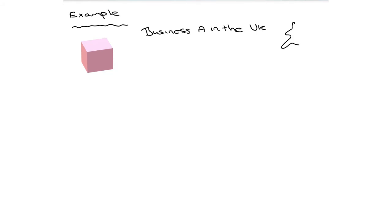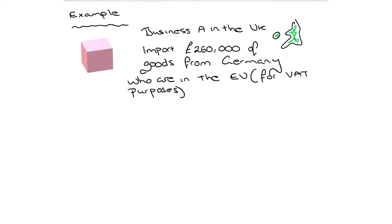So if we take an example, if you've got business A in the UK, excuse my drawing, and they import £260,000 worth of goods from Germany, who are in the EU for VAT purposes. Then business B in Germany, let's draw this here, are also VAT registered. So we've got a VAT registered company in the UK, a VAT registered company in Germany.